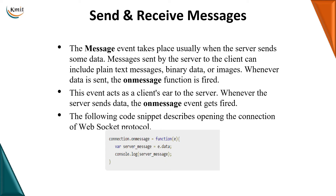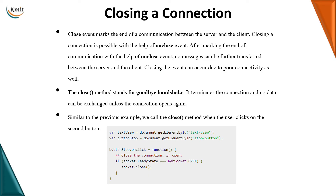To send and receive messages, we use the message event — the onmessage function sends messages from the server to the client. To close a connection, we use the close event, triggering onclose, which acts as a goodbye handshake that closes the socket connection completely.